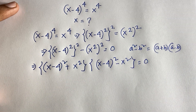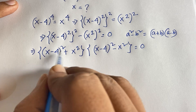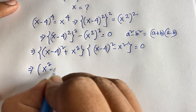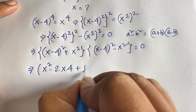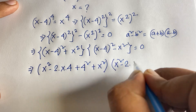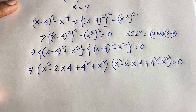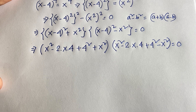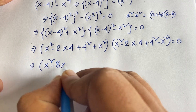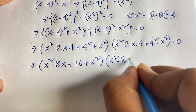Now expanding (x minus 4) squared using the identity (a minus b) squared equals a squared minus 2ab plus b squared, where a equals x and b equals 4, we get x squared minus 8x plus 16. So the first factor becomes: (x squared minus 8x plus 16 plus x squared), and the second factor becomes: (x squared minus 8x plus 16 minus x squared) is equal to 0.